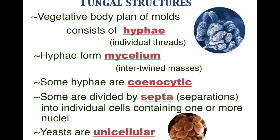Fungi have a cell wall called chitin. Some terms you need to know for fungal structures: a single strand or individual thread is called a hypha. This is a vegetative body, meaning there are no spores — it is not a fruit and does not contain the reproductive parts. Many hyphae intertwined together is called mycelium.